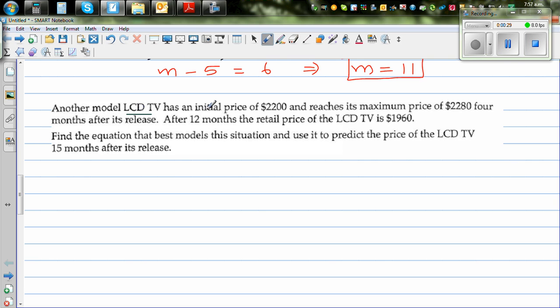Another LCD TV has an initial price of $2,200. So let's say C is for the price, C is the cost or the price and N is the number of months. Let me make up some table so that you have information. So N and C. When it was the initial price of the TV was $2,200. So when N was 0, the price is $2,200. This is the initial price.